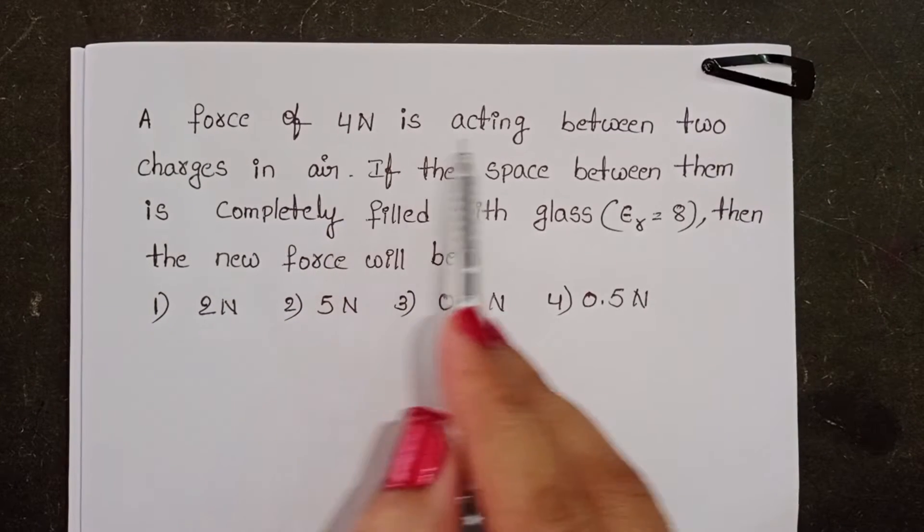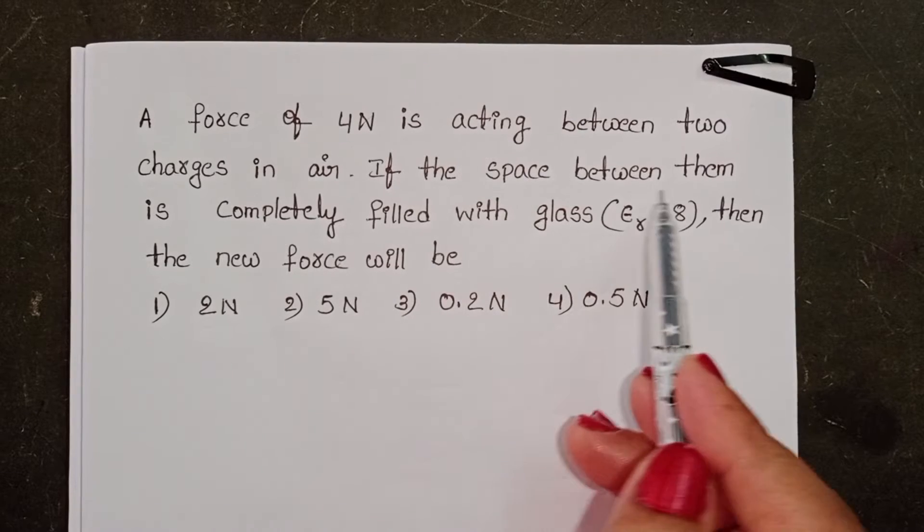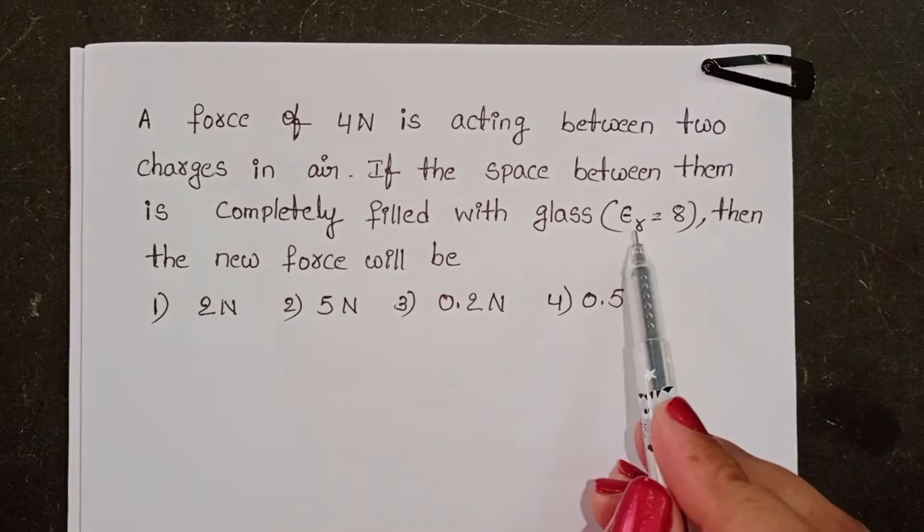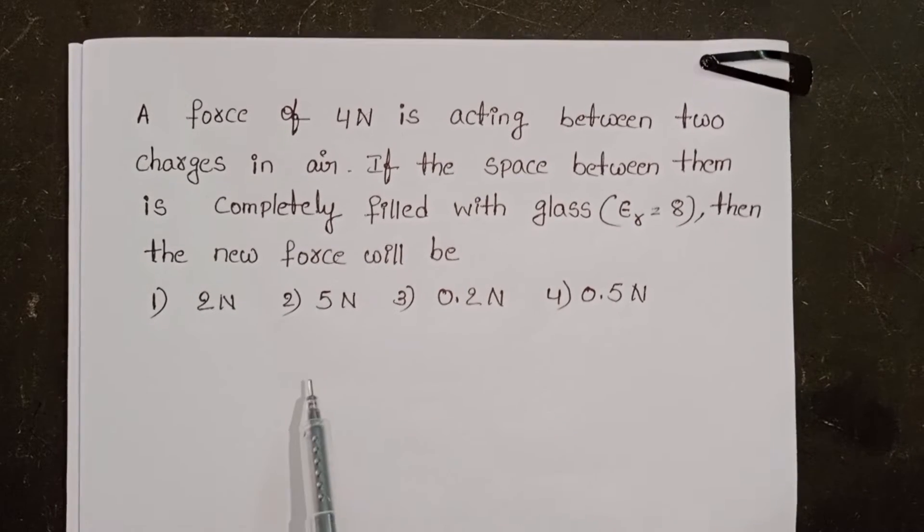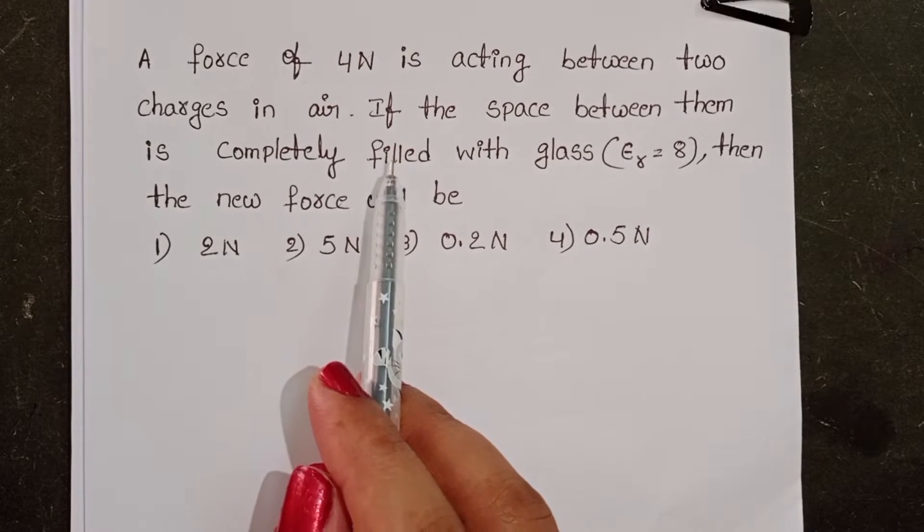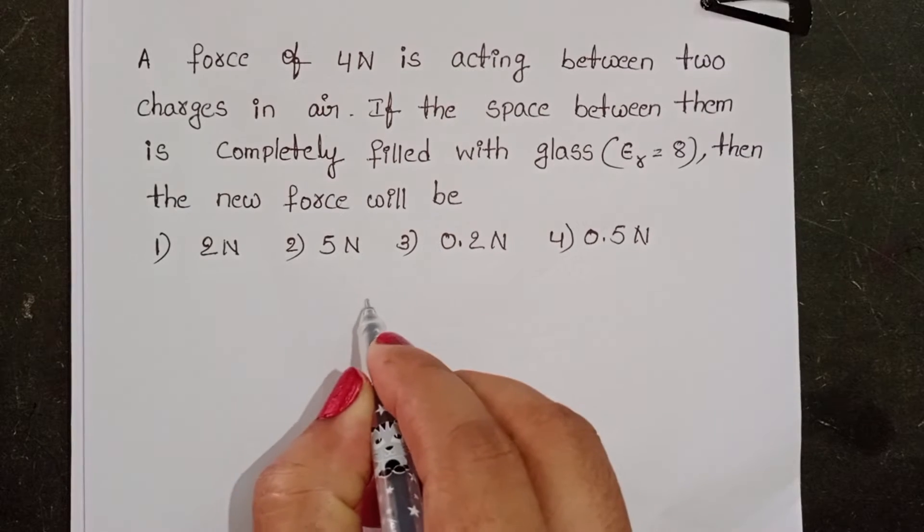A force of 4 newton is acting between two charges in air. If the space between them is completely filled with glass, relative permittivity 8, then the new force will be. In the given problem, initially two charges are placed in air, then the force between the two charges is 4 newton.